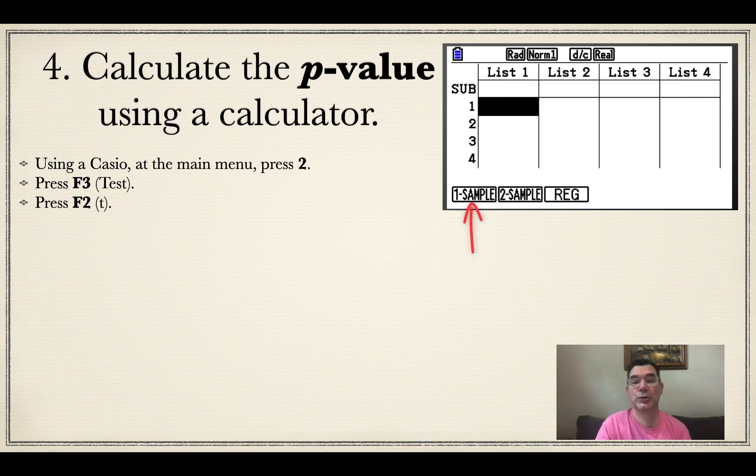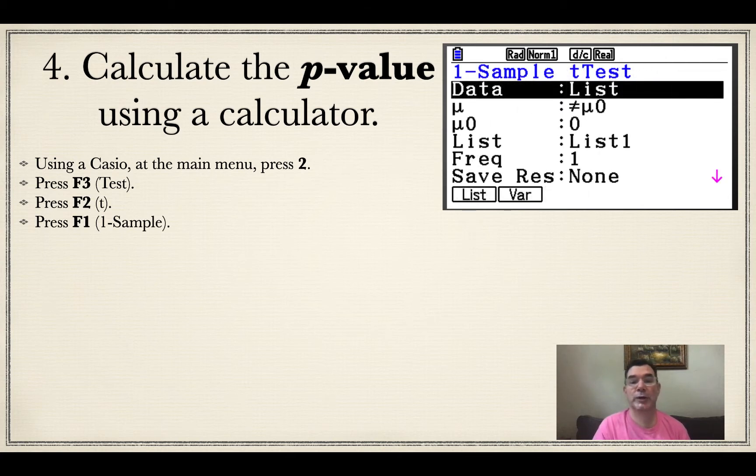Now I have a one sample, two sample, and a regression. We only have one sample, so we're going to press F1 for that. Here's what we're going to enter into the screen that shows up. The data is not from a list, it's from a variable. We already have all of the statistics from that sample. We have the mean and we have the standard deviation. So data is going to be variable.